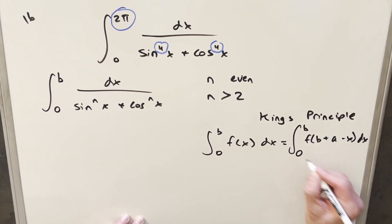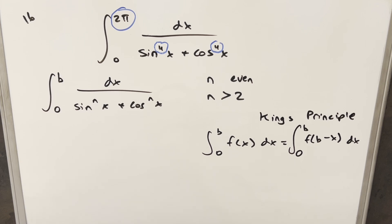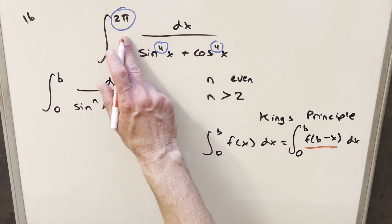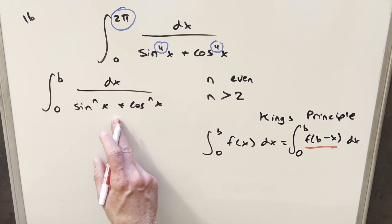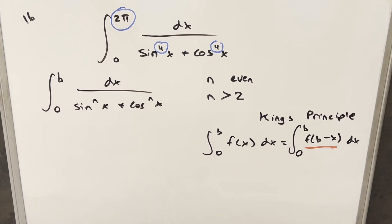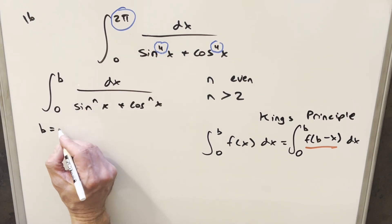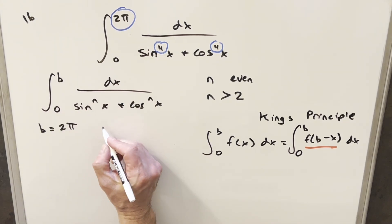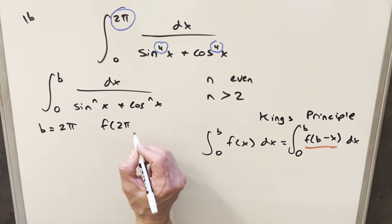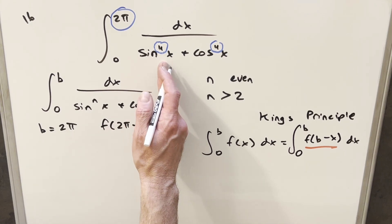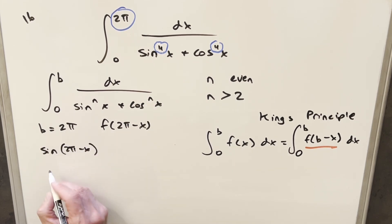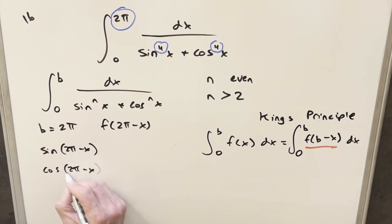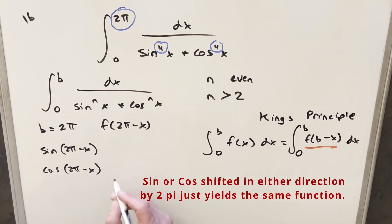With a equal to 0, things simplify. The key expression we need to examine is f(b − x). Coming back to our integral, this would be f(2π − x). With the even exponents in our original problem, let's see what happens when we evaluate f(b − x), starting with the specific case b = 2π, so we want to calculate f(2π − x). We need to figure out what happens to sin(2π − x) and cos(2π − x).